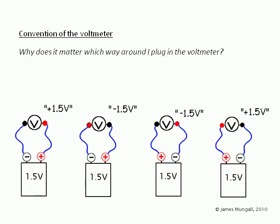Convention of the voltmeter, and why does it matter which way round I'm plugging the voltmeter? In these diagrams, we've got a choice of way round to plug into the voltmeter, and the battery is behaving like the electrochemical cell.